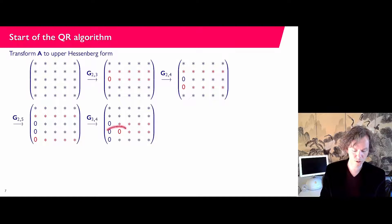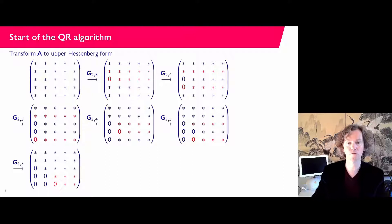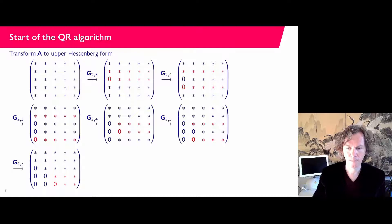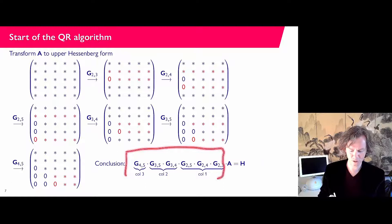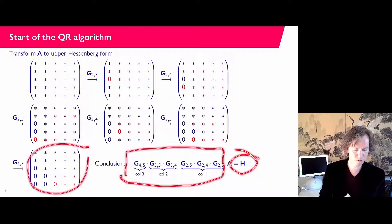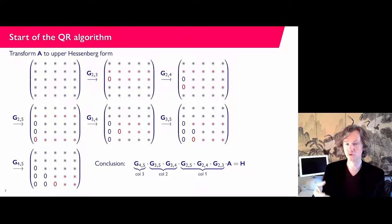After all these steps we have used Givens rotations to arrive at a matrix H in upper Hessenberg form, by left-multiplying our matrix A with Givens rotations to create zeros below the first sub-diagonal. Three rotations handle the first column, two rotations for the second column, and one rotation for the third column. Everything below the one lower diagonal is zero.